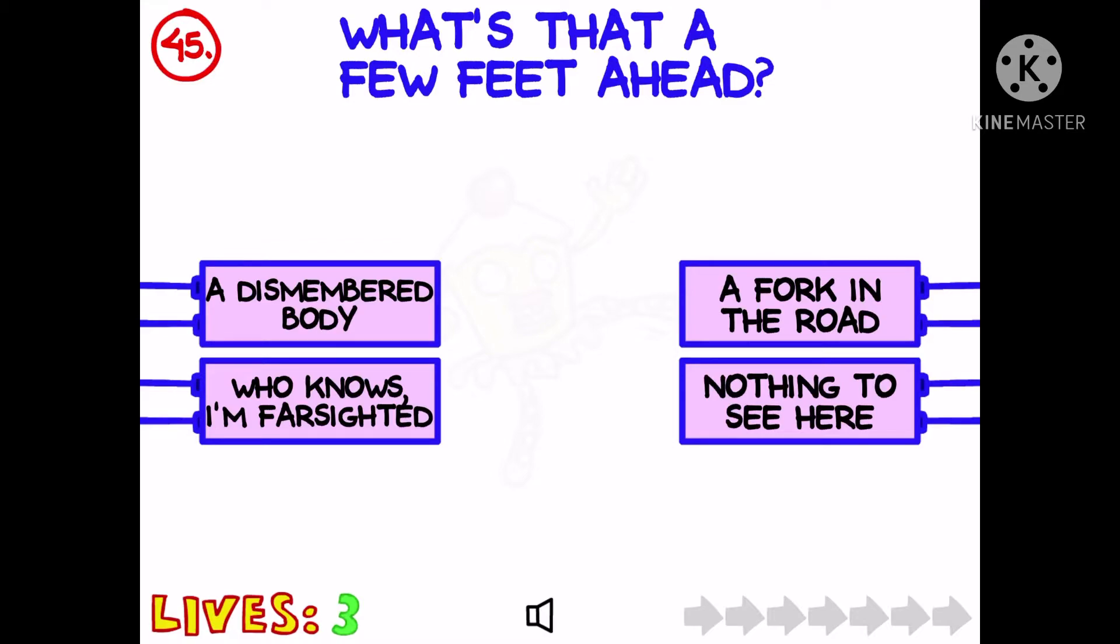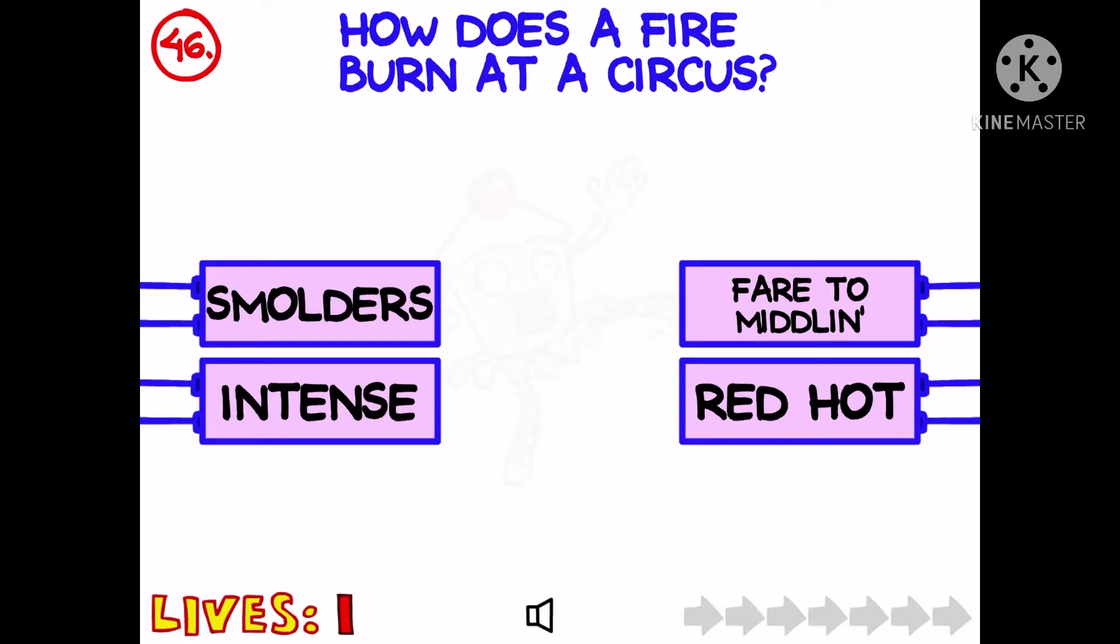What's that? A few feet ahead. Nothing to see here, I guess. I don't think it's a dismembered body. That's a bit concerning. No, it was. Oh my gosh. Okay, how does a fire burn at a circus? Red hot, I guess. Maybe intense. I don't think they'd make it fair to middling. Oh no. Okay, so it's intense, I'm guessing.